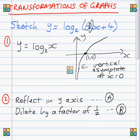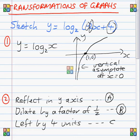Let's call that transformation B. The reason why it's a half is in the x-direction, you've got to do the reciprocal of the number. And the 4 at the end, what's the plus 4 do? Well, that moves the graph left by 4 units. Let's call that one transformation C.